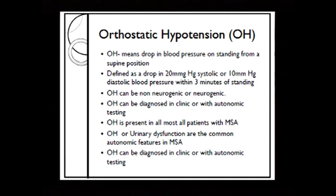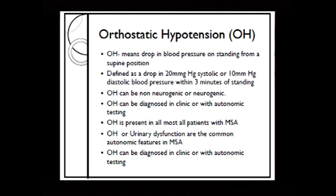Orthostatic hypotension tends to be present in most patients who have multiple system atrophy — not necessarily 100% — and it can be the initial symptom in quite a few patients, along with urinary dysfunction. It can be diagnosed in clinic or in the lab.